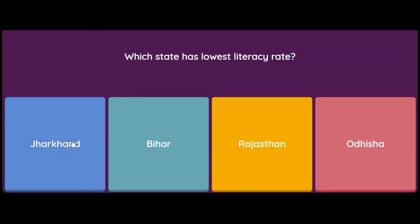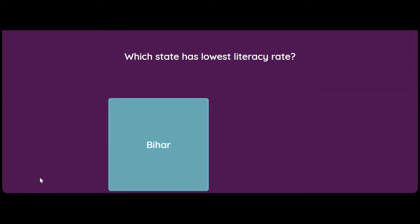Which state has the lowest literacy rate? Options are Jharkhand, Bihar, Rajasthan, or Odisha. The answer is Bihar — Bihar has the lowest literacy rate.